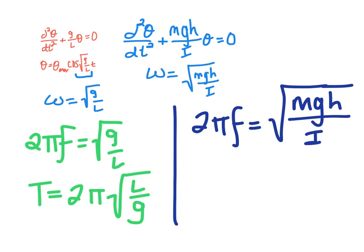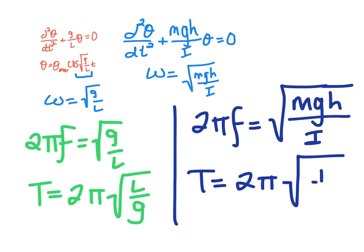Therefore the period of the physical pendulum is T = 2π√(I/mgh), where h is the distance from the axis of rotation to the center of mass. This applies to various different objects. Let's now apply this expression to the actual rod pendulum we've been using, since the formula above is the more generic form.